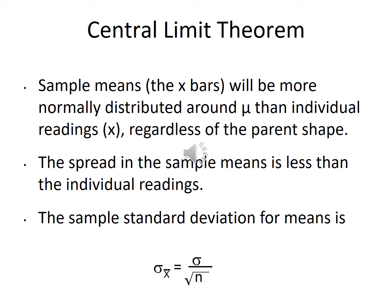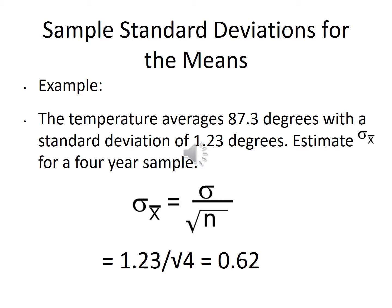Quick example: temperature averages 87.3 degrees with a standard deviation of 1.23 degrees. To estimate the standard deviation of the means for a sample size of four, we take 1.23 divided by the square root of 4, which gives 0.62. So we went from a variation of 1.23 for individuals down to 0.62 for the means.